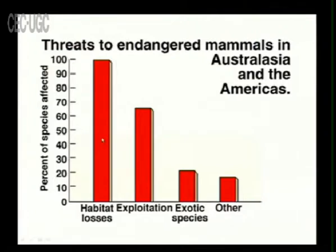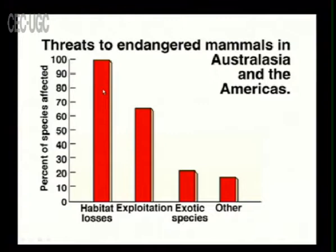The threats to endangered mammals in Australia and America show that habitat loss is the biggest threat, followed by exploitation, exotic species and others. Habitat loss is a major threat because all species are interrelated — for example, a squirrel's habitat is trees, and when we cut trees the squirrel has no place to go, cannot build a nest or swim, and naturally loses its habitat. Habitat loss is the biggest threat to biodiversity, followed by habitat fragmentation, where dividing a whole habitat into fragments also causes discontinuity in biodiversity.